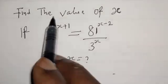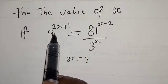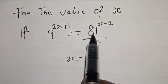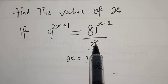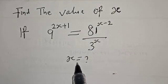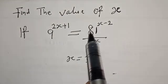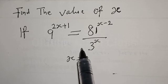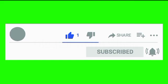Find the value of X if 9 raised to power 2X plus 1 is equal to 81 raised to power X minus 2, over 3 raised to power X. Then what is the value of X? Hi everyone, welcome to my class. In today's class we want to look at how we can find the value of X from this given exponential equation. Before we proceed, please don't forget to like, share, comment, and subscribe — subscription is free.